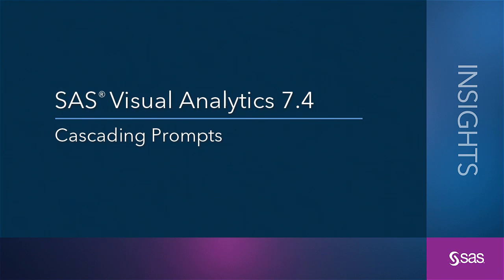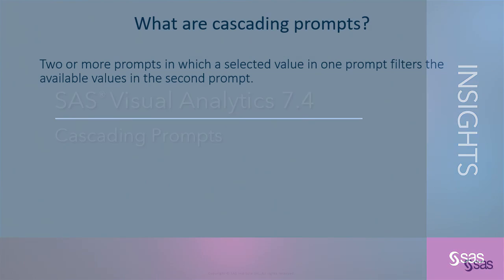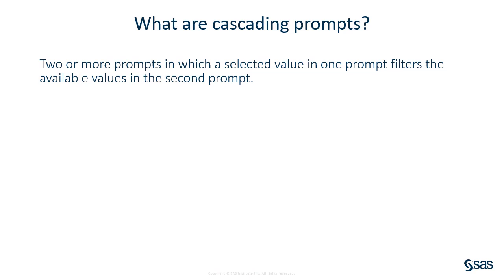This video will walk through how to configure cascading prompts using SAS Visual Analytics 7.4. Let's address what cascading prompts are. It is when you have two or more prompts in which a selected value in one prompt filters the available values in the second prompt.